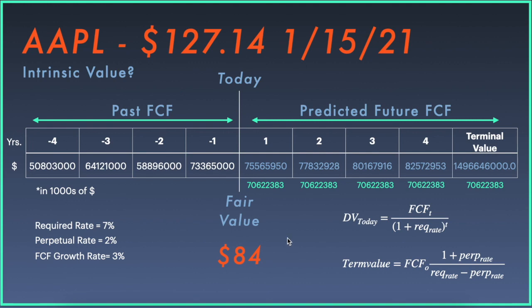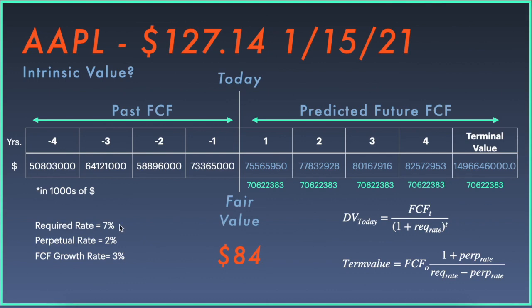Now that we have the fair value, we can apply a margin of safety. This assumes we want the share price to fall, say, ten percent below the $84 fair value before we buy Apple shares. It's important to always consider that this intrinsic value calculation has many assumptions — the required rate, perpetual rate, and free cash flow growth rate. Small changes in these numbers can have a big impact on the calculated fair value. There is also a great YouTube video explaining the DCF model in far more detail from Jimmy at Learn to Invest, which I'll link in the description.